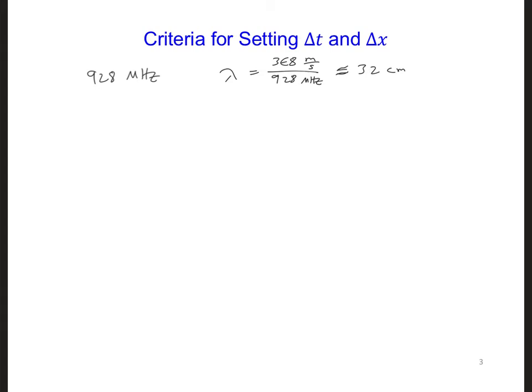So to get 10 grid cells per wavelength, the highest number we could set dx equal to can be equal to or less than 3.2 centimeters.